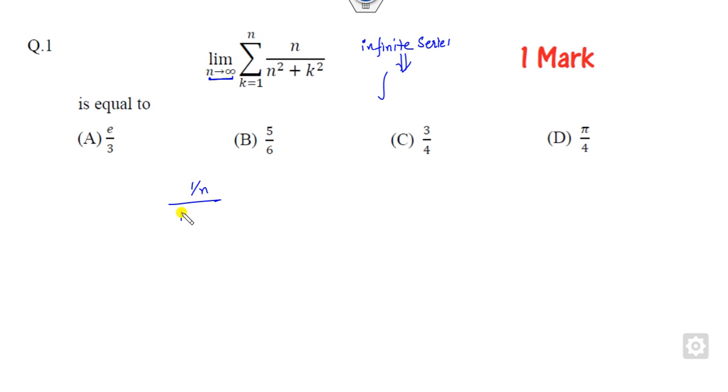Now you can integrate this. Since the limits are changing with respect to K, I can write it with respect to K. You can take K/N as X. Then DK is N*DX. Now you can see 1/N*DK is DX. This is 1/(1 + X²). What is the answer of this?